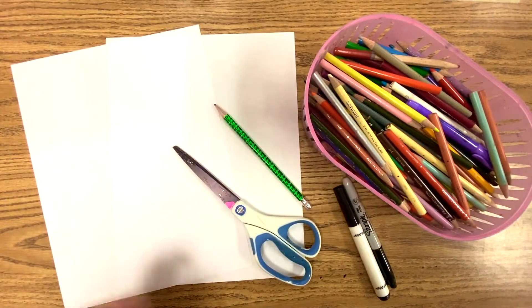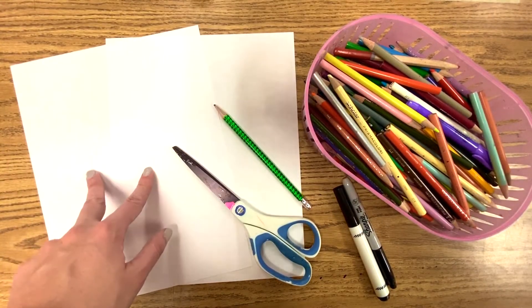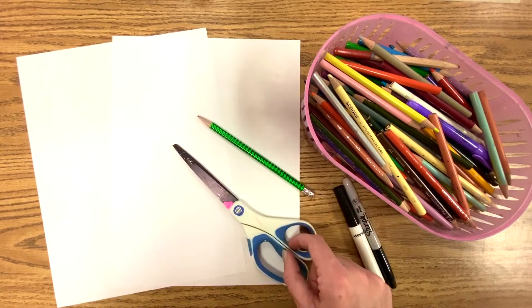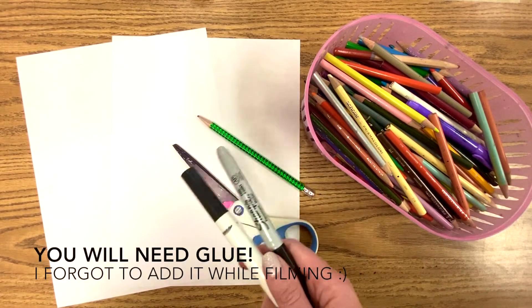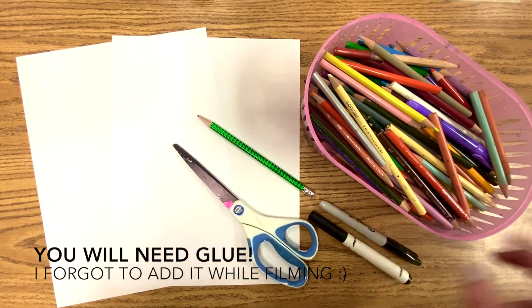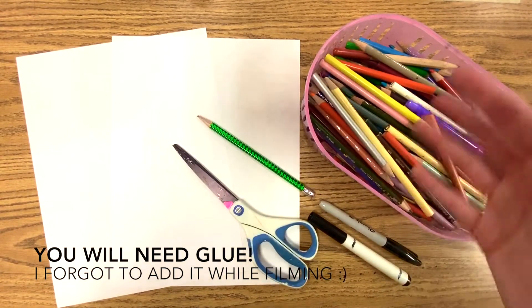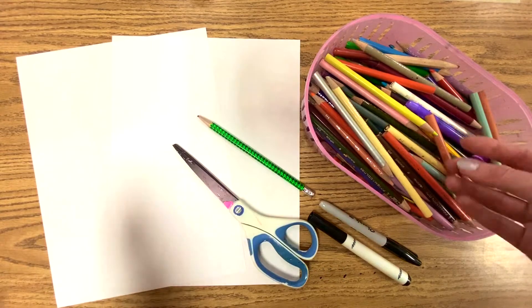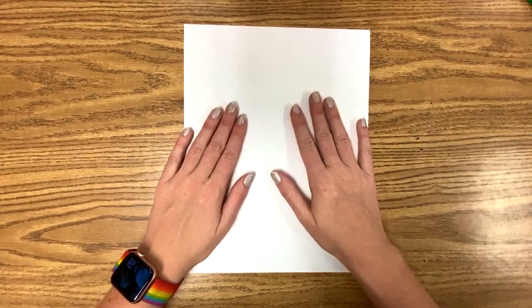The materials you'll need today are two pieces of paper, a pencil, scissors, some sort of black marker if you have them, and colored pencils or crayons or something to add color. Let's get started.